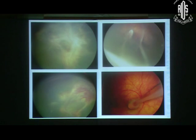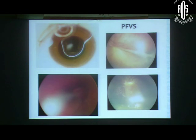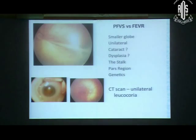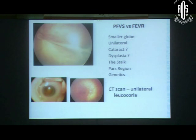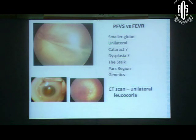Persistent fetal vasculature syndrome (PFVS), previously called PHPV, is an important differential diagnosis for FEVR because there is a stalk and sometimes subretinal exudation with a similar appearance. The first thing to look at is the globe size — PFVS comes with a smaller globe, unilateral most of the time, though bilateral cases exist. A cataract, if present, is more eccentric. The real distinguishing sign is peripheral scleral depression to examine the pars plana region: in PFVS, the pars plana and pars plicata are underdeveloped, whereas in FEVR they are very well developed.